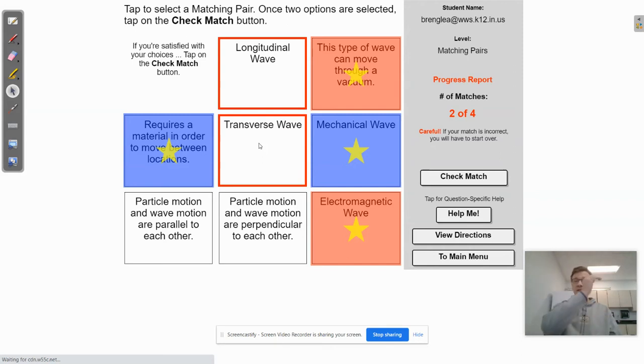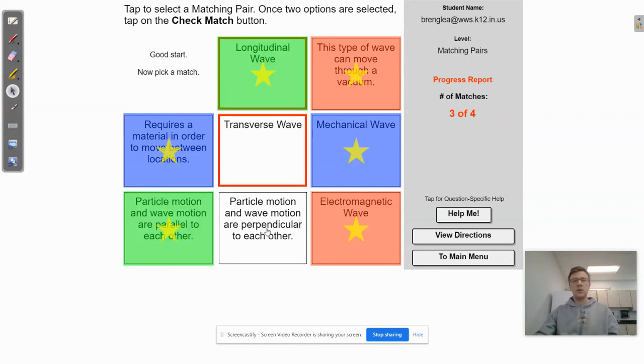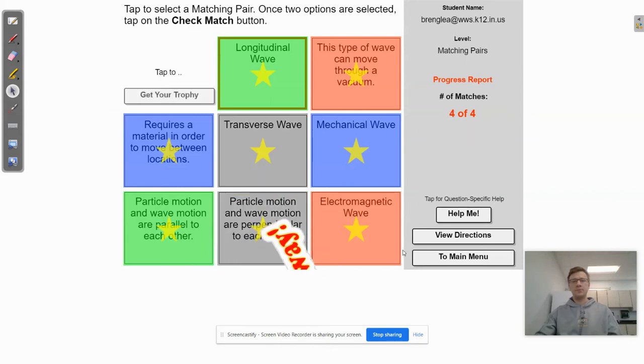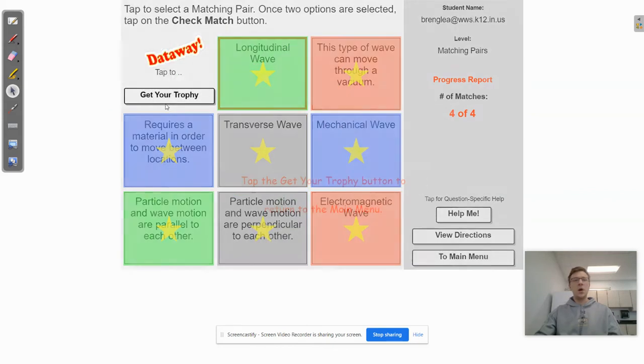So if you think about the slinky, when you pulse the slinky, the rings of the slinky are going to vibrate back and forth like this. So the wave moves this way and the particles move parallel to the wave. Okay. Versus with this one, notice, watch my wrist. My wrist is going down and then up, down, up, down, up. So on the transverse wave, that one's going to be perpendicular, 90 degree angle to wave travel. So we'll go ahead and choose parallel and longitudinal and we'll check that one. And then transverse and perpendicular go together. Data way. Let's get our trophy.